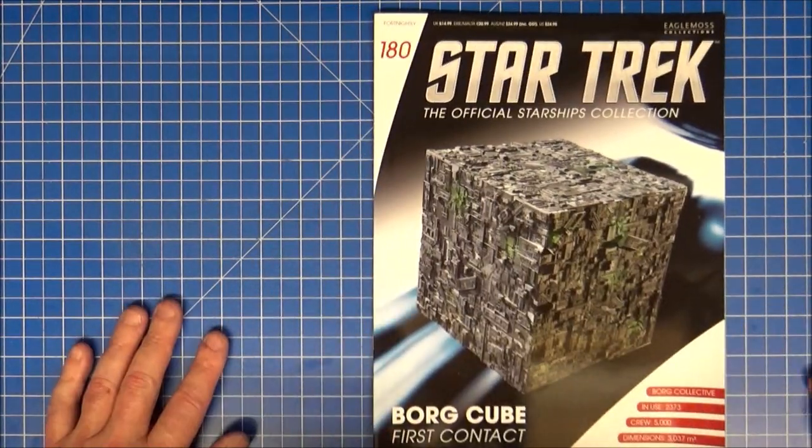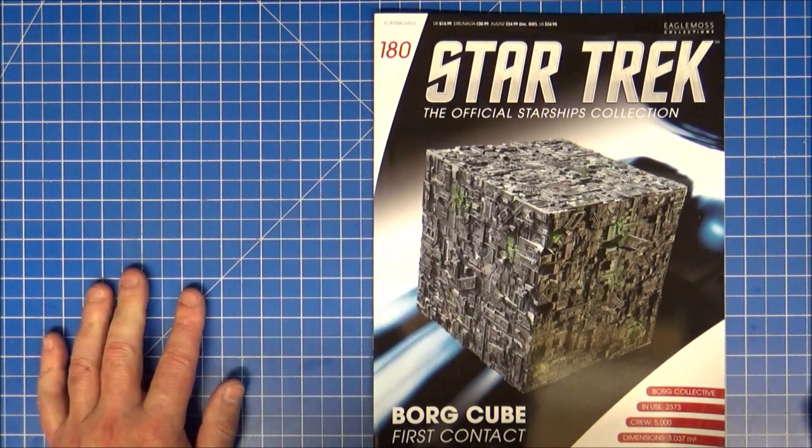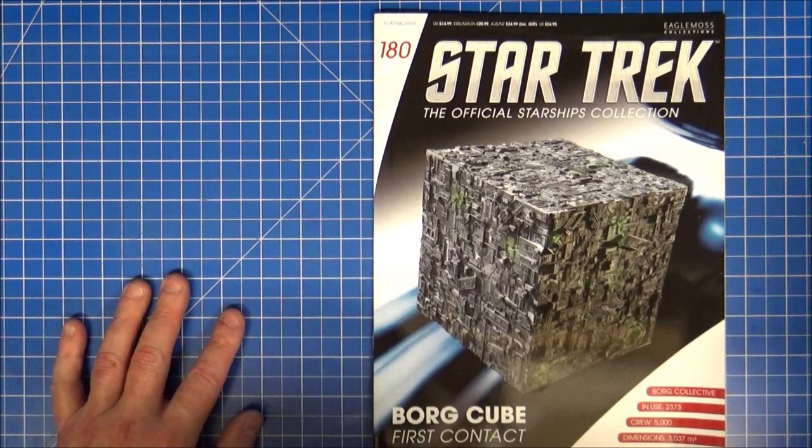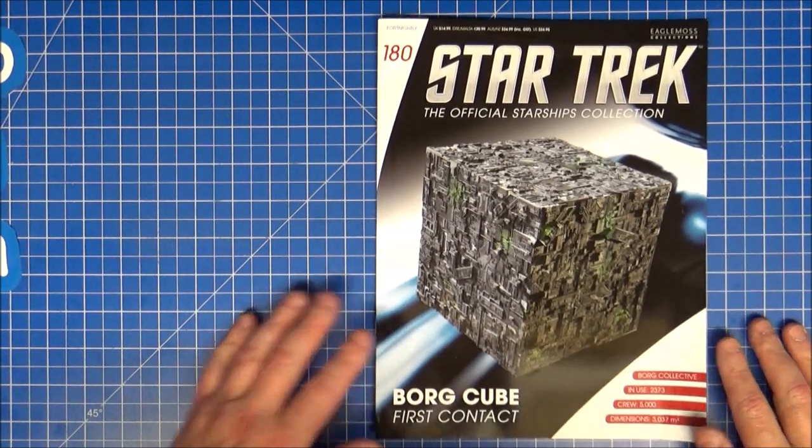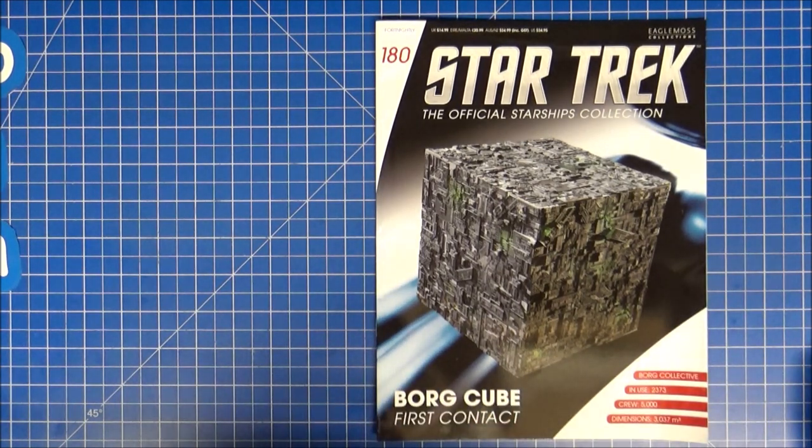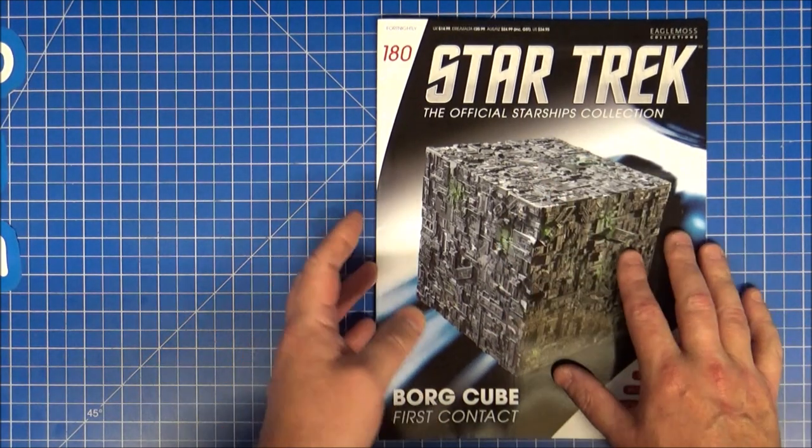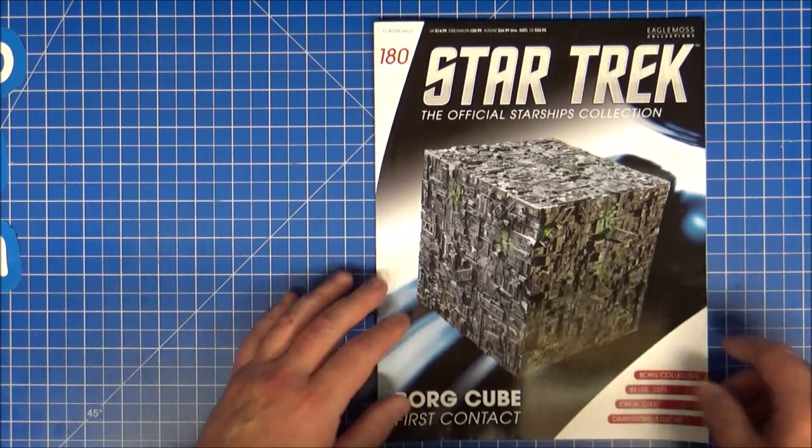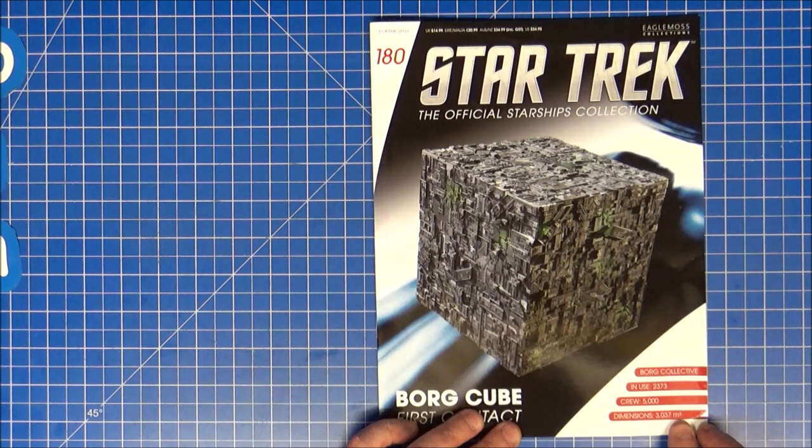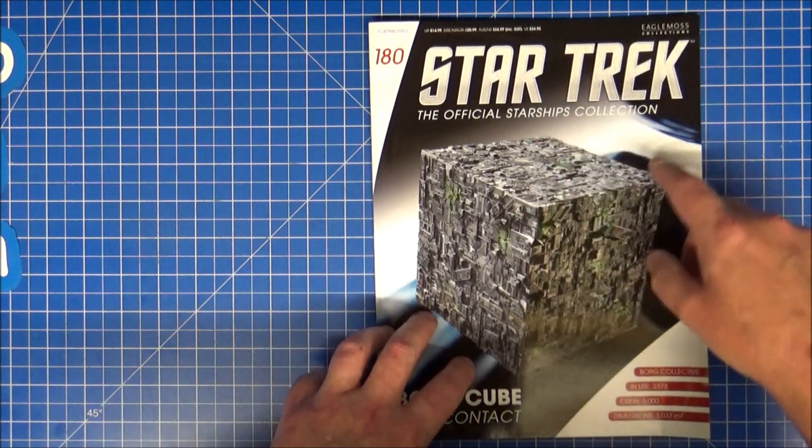So, get on with the final model and magazine review from Eaglemoss. We end up with the Borg Cube from First Contact. This is not the first Borg Cube we ever saw. This is actually not even the last one we saw because we saw the one in Picard. The original one had more pipe work. This has got a lot of detail on here, but the dimensions is 3,037 cubic meters, so it's three kilometers by three kilometers by three kilometers.